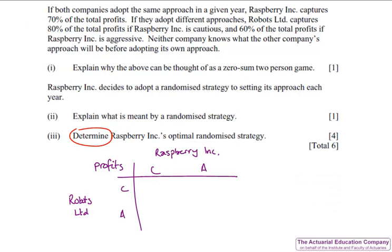To do this would have required our table of profits. Don't get caught out here. We're told that Raspberry captures 70% of the total profits if they adopt the same approach. But then it tells us Robots gets 80% if Raspberry is cautious, and so obviously Raspberry will get 20%. It's now a standard question from the notes where you assign probability P to cautious, 1-P to aggressive, and calculate the expected profits for each option Robots Limited takes, and then set them equal.